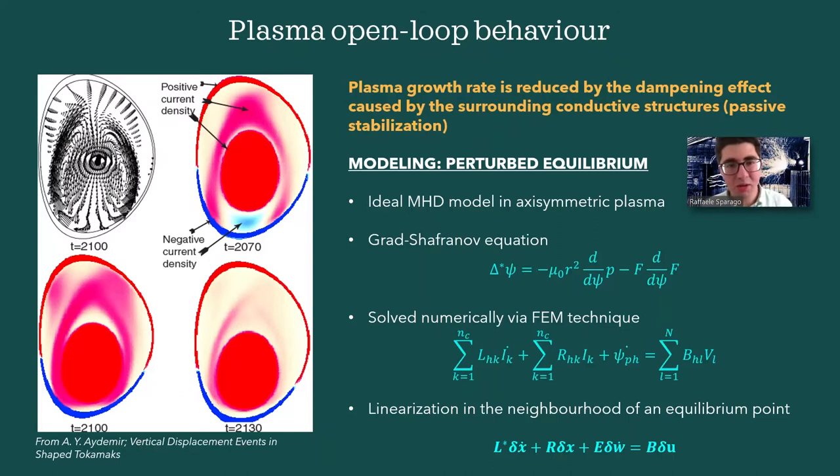Now, before going there, I want to talk about modeling a bit. In this case, we prefer the perturbed equilibrium approach, which introduces a free boundary problem, and we start from ideal MHD in an axisymmetric plasma, and we obtained a two-dimensional Grad-Shafranov equation, and we solve the PDE problem through the FEM technique, discretizing the machine in filamentary circuits, and then we finally linearized this system in the neighborhood of its equilibrium point.